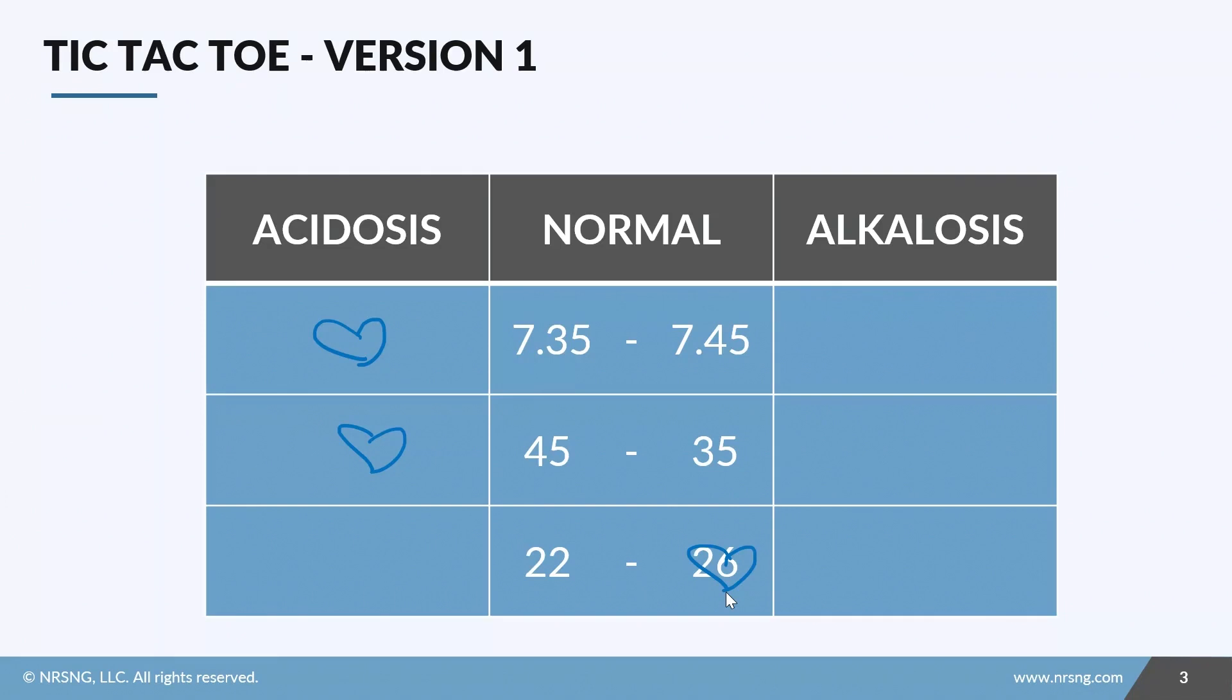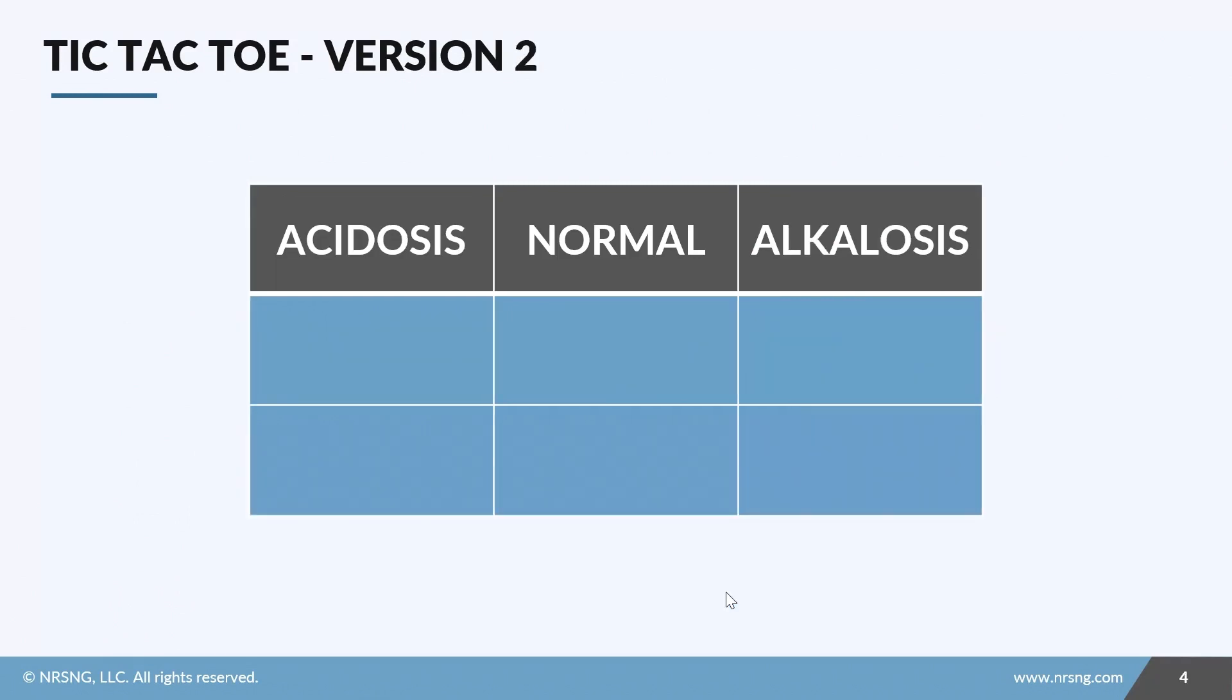So I'm gonna show you tic-tac-toe version two and show you how quick and easy it is, and I think you're gonna love it. So in version two you're gonna set up a little table that looks like this: three columns - acidosis, normal, and alkalosis - and you'll have two rows. This is super easy to just jot at the top of your paper: acid, normal, alk, two columns, two rows, right?